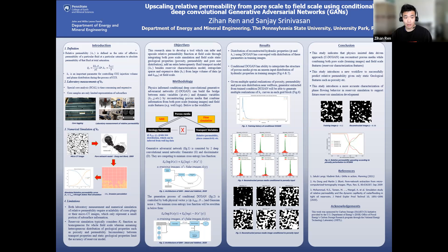So that it can extrapolate sparse and expensive data from a large volume of data at field scale. The method we use is called conditional deep convolutional generative adversarial networks. It can take geologic variables as input to the generator network, and then reconstruct porous media conditioned to these geologic variables. With the reconstructed porous media, we can perform flow simulations to get transport variables like relative permeability or phase connectivity.